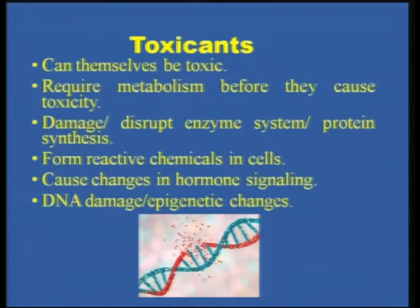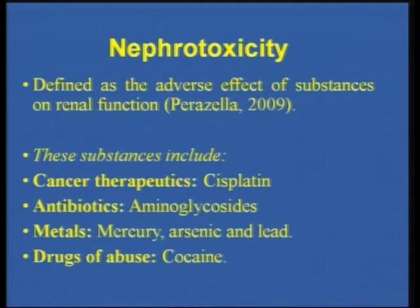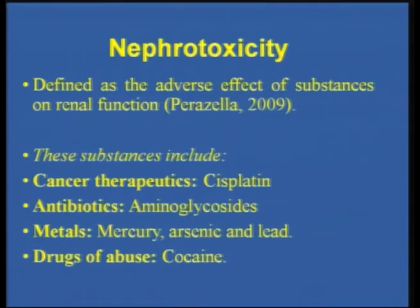Let us take nephrotoxicants and nephrotoxicology in detail. Toxicants can be toxic in nature themselves, or they may require metabolism before causing toxicity. They can damage or disrupt the enzyme system, disrupt protein synthesis, form reactive chemicals in our cells, cause changes in hormonal signaling, bring about DNA damage, DNA breakage, and also epigenetic changes. Nephrotoxicity, as the term indicates, deals with toxicity to the excretory system — specifically the kidneys. Defined by Perazella in 2009 as the adverse effect of substances on renal function, nephrotoxic substances include cancer therapeutics such as cisplatin, antibiotics such as aminoglycosides, metals such as mercury, arsenic and lead, and drugs of abuse like cocaine.